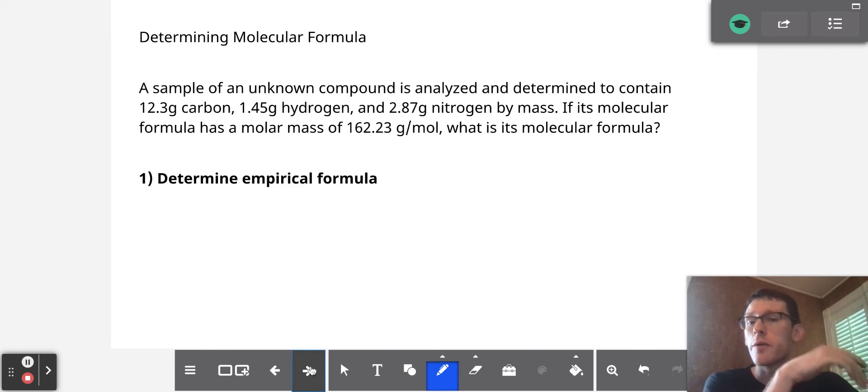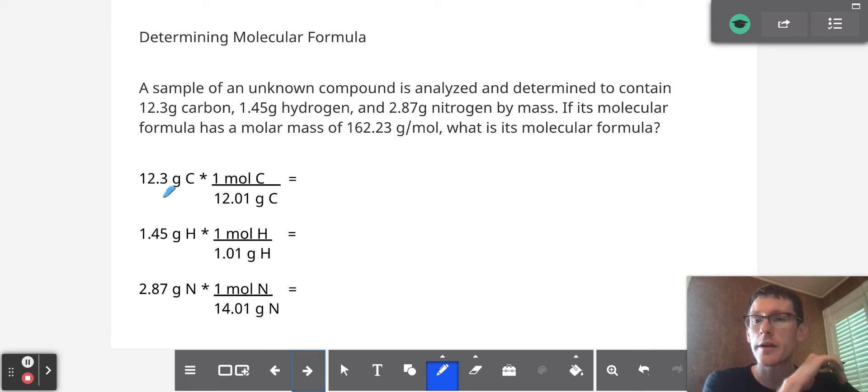Step one, we're going to have to determine the empirical formula. To do that, we'll convert the grams of carbon to moles of carbon, the grams of hydrogen to moles of hydrogen, and the grams of nitrogen to moles of nitrogen. And what we find are these amounts.